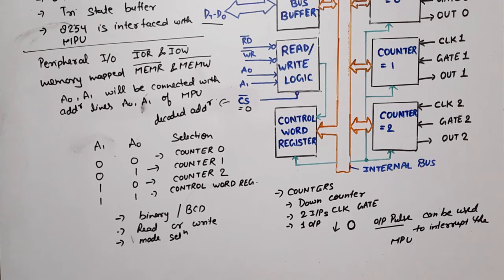So in case of 8254, microprocessor, when the counter is decrementing stage, it can read the count value without interrupting the operation. So this is all about the block diagram of 8254.